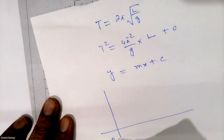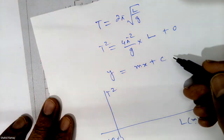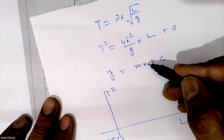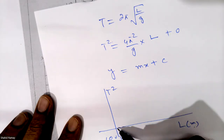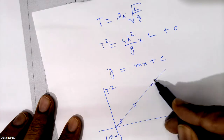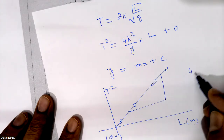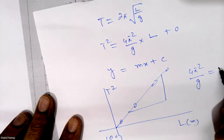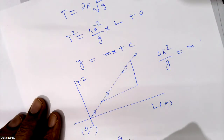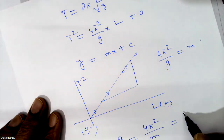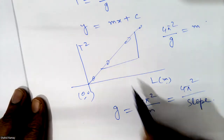Since c is zero, our graph will start from the origin (0, 0). L in meters is along the x-axis and T² is along the y-axis. The slope m equals 4π²/g. Our graph line will be straight, and we will find the slope, then use the equation g = 4π²/slope to find the value of g.